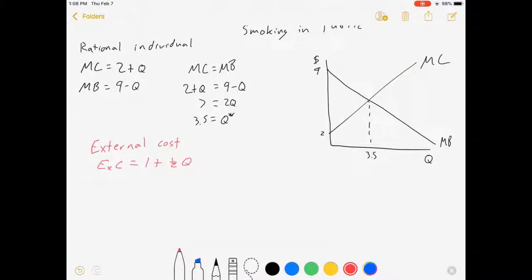Well, now my marginal cost is not capturing all of the costs in this decision process. We need something bigger. I'm going to call it a marginal social cost, which is the marginal cost plus the external cost, which is 2 plus Q plus 1 plus 1 half Q, which is 3 plus 3 halves Q.